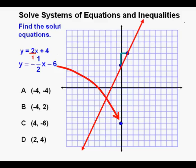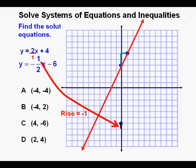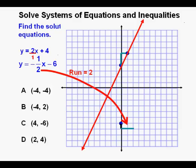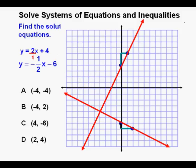Next we graph our second line starting with the y-intercept of negative 6. Then we draw our rise of negative 1 from the y-intercept — that is down 1. Then we draw in our run of 2 by going 2 to the right. We draw in another point at the end of the run and draw our line through the points. This point where the lines cross is the intersection between the two lines, or the solution to the system of equations.